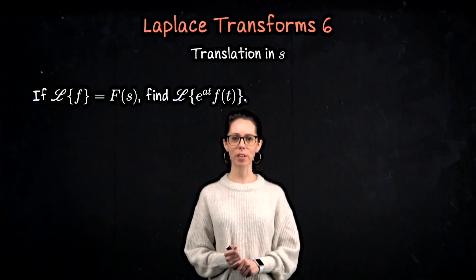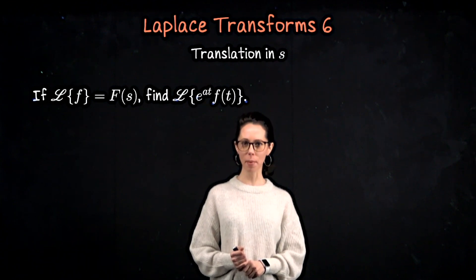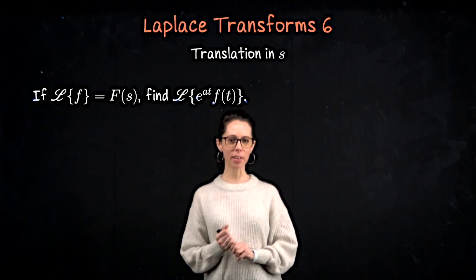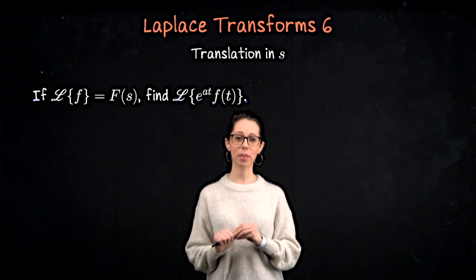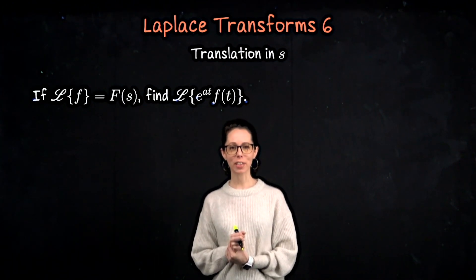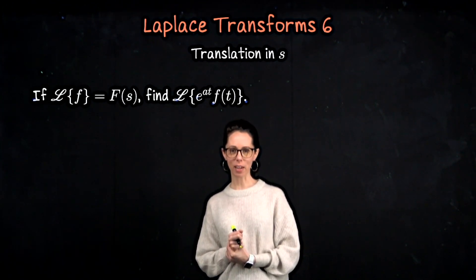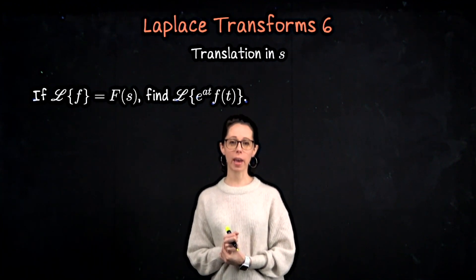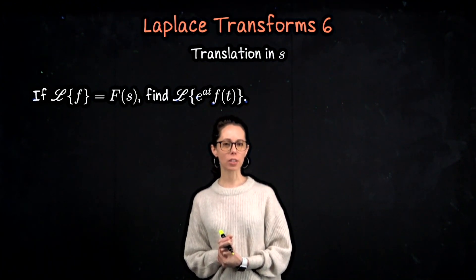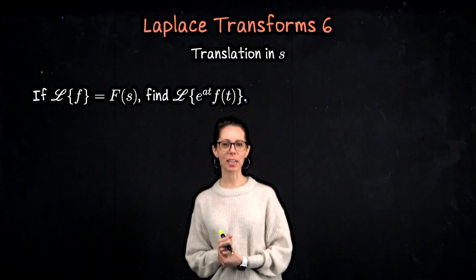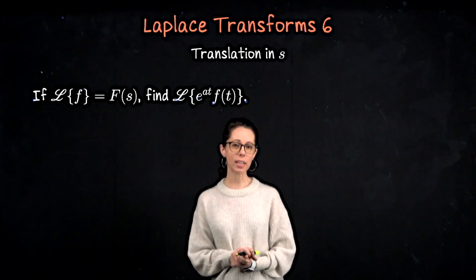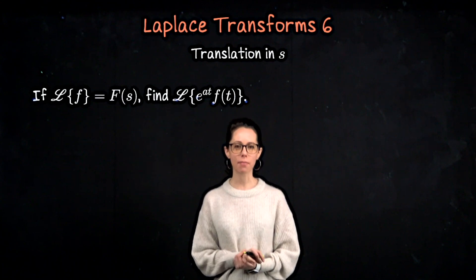In this lesson on the Laplace transform, we are going to talk about something called translation in S. It's not obvious why we call it that until we go through this exercise. Imagine that we have some function f of t, whose Laplace transform we call capital F of S. Let's see what the Laplace transform would look like if I took f of t and multiplied it by the exponential function e to the at, for some value of a.